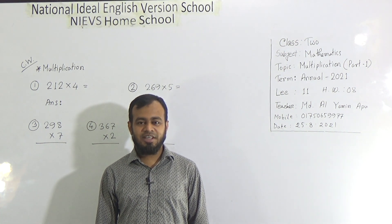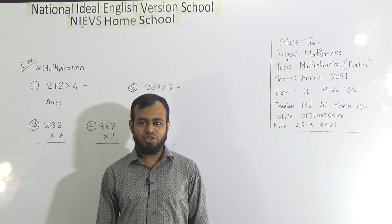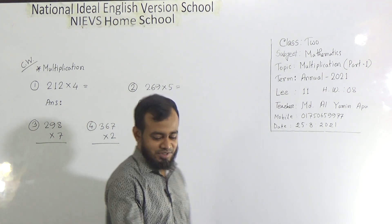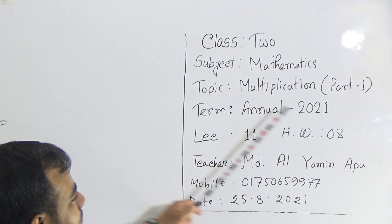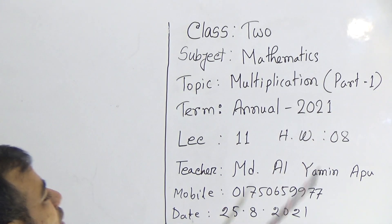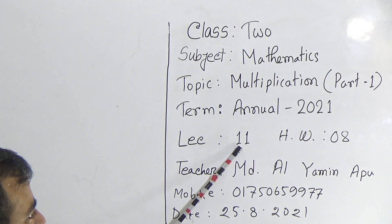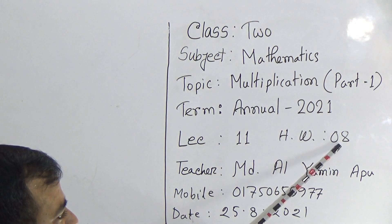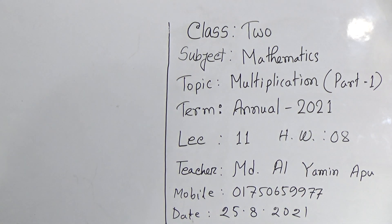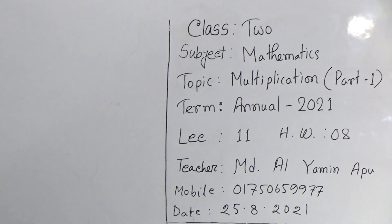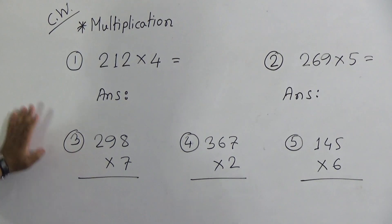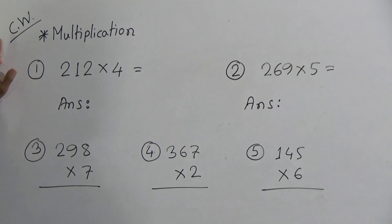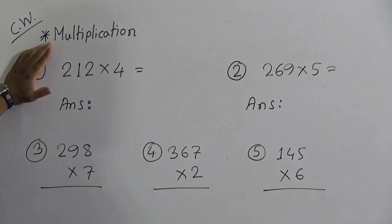My dear students, I am going to take a Math class today for the students of Class 2. So let's start our today's class. Our today's topic is Multiplication Part 1. Today your lecture number is 11 for the annual term examination and your homework number is 8. Today we will solve 5 multiplications I have written already on the board. It's a CW class and the topic is Multiplication.